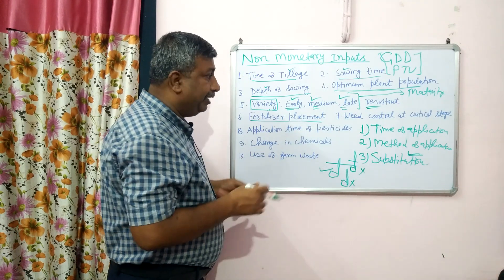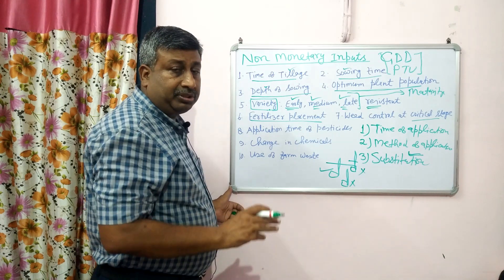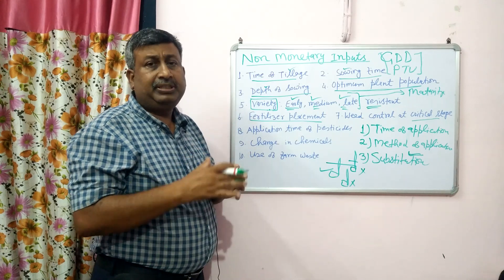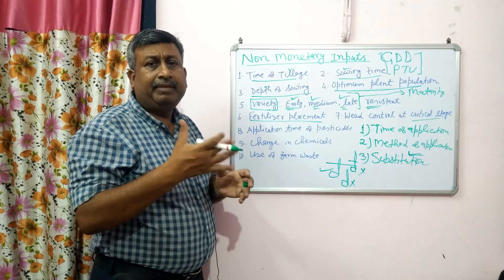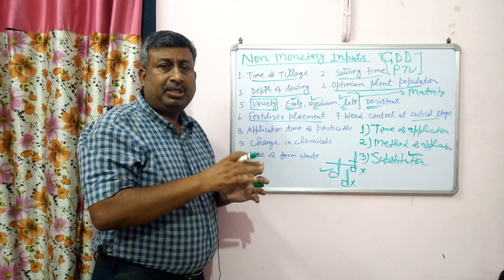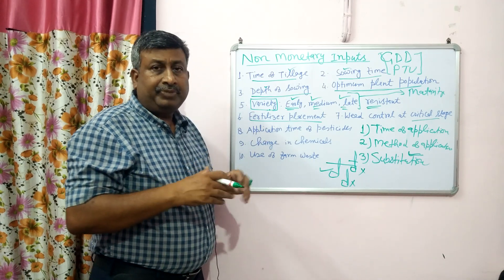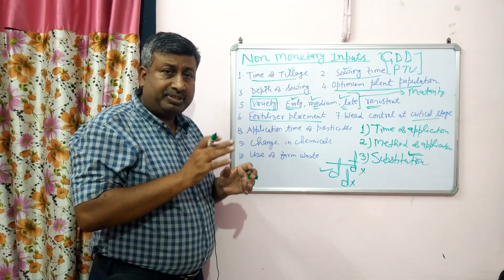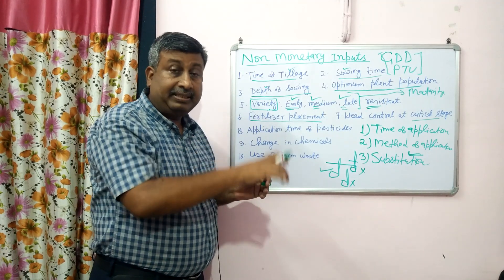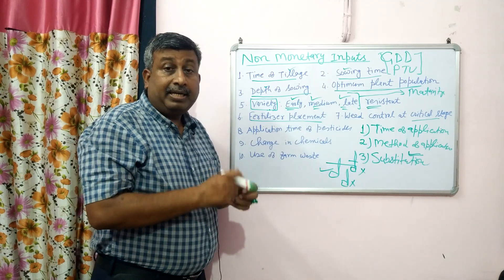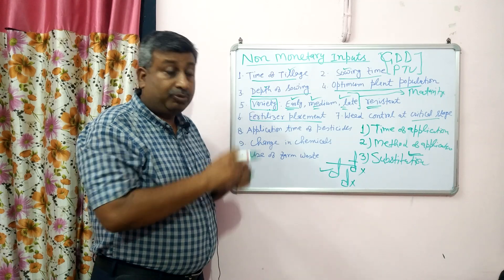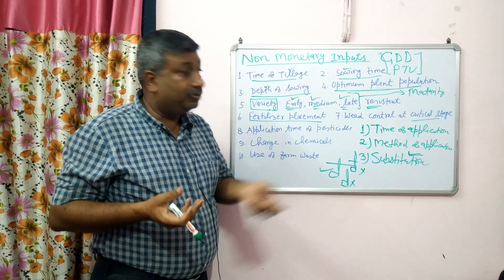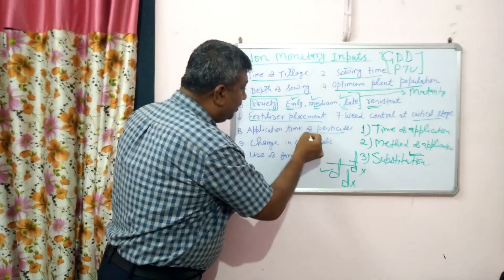Then weed control at the critical stage. There is a critical growth stage at which weeds must be controlled, otherwise there is yield loss. In general, for crops of 120-day duration such as rice, wheat, sorghum, the initial 25 to 30 days are very important. If weeds are managed at this stage, there is an increase in yield. Weeding at a later stage of 40-45 days involves the same cost, but maximum return is at 30 days. So weeding should be done at the critical growth stage.